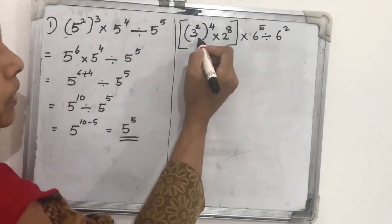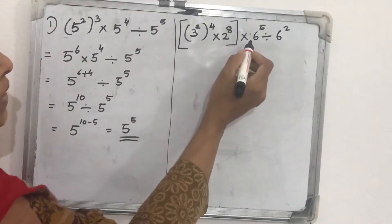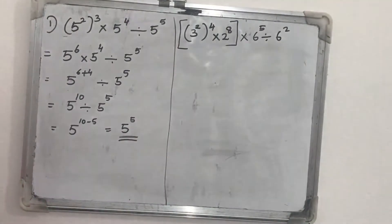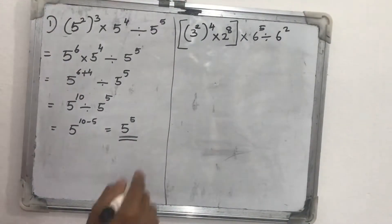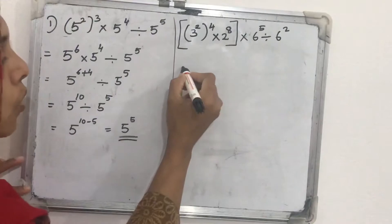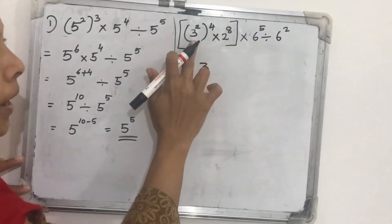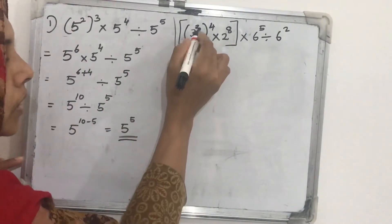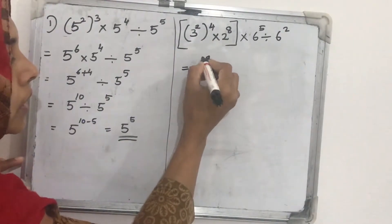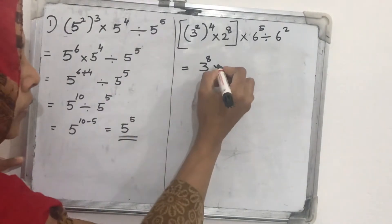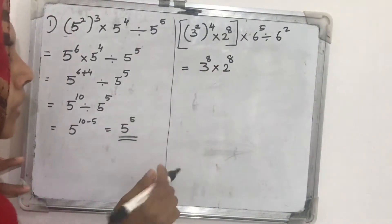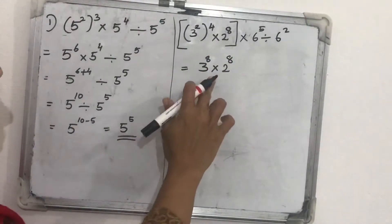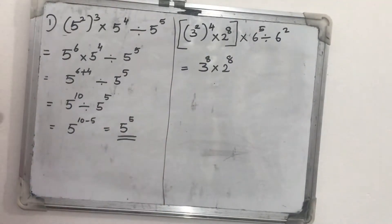Next question: three squared, whole raised to four, into two raised to eight, into six raised to five, divided by six squared. Here we use the same laws. Three squared whole raised to four — using x raised to a whole raised to b equals x raised to a times b — becomes three raised to two times four, which is three raised to eight. The powers are the same as two raised to eight.